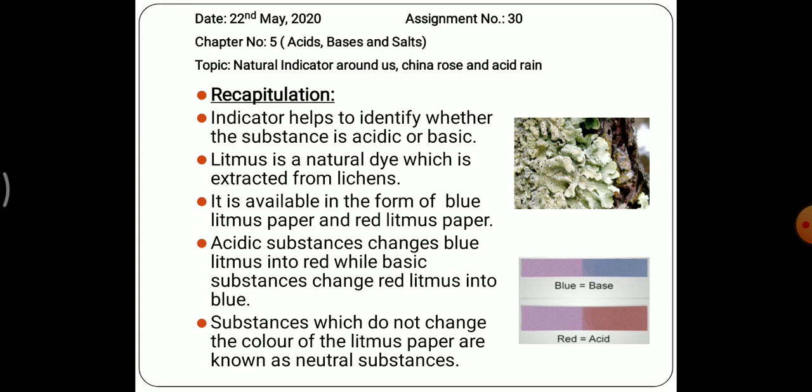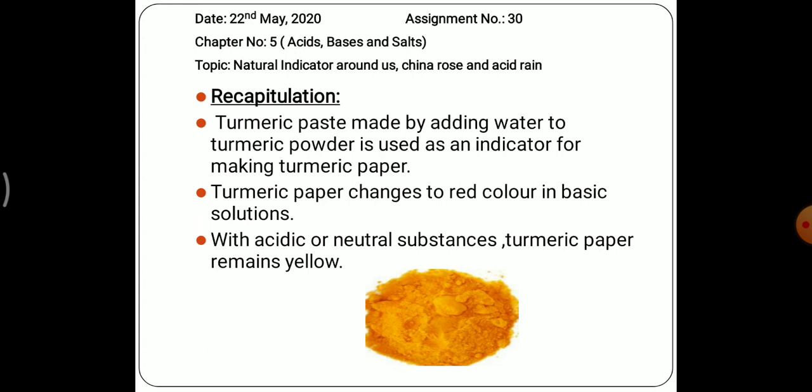Then we studied about the turmeric indicator, which is yellow in color. We usually use turmeric in different curries, but it is also used as an indicator. With the help of turmeric paste we can make turmeric paper. In acidic solution and in neutral substances, this turmeric paper remains yellow in color, but it changes to red color in basic solution.